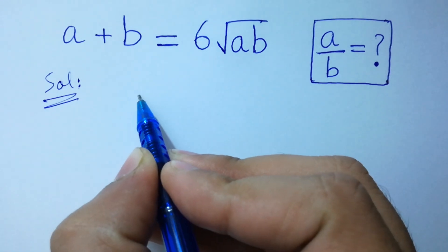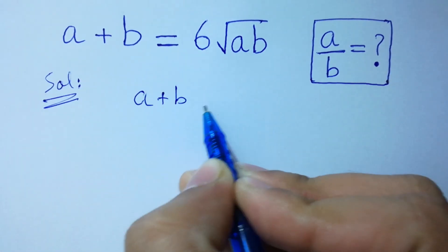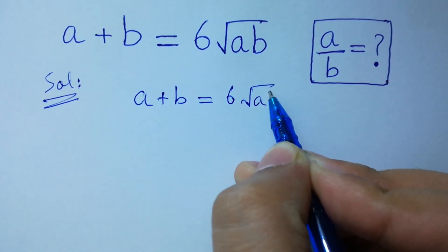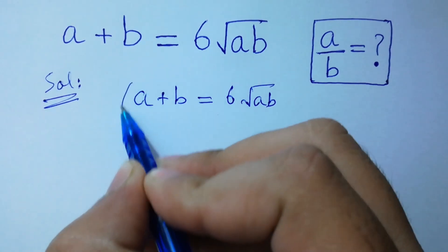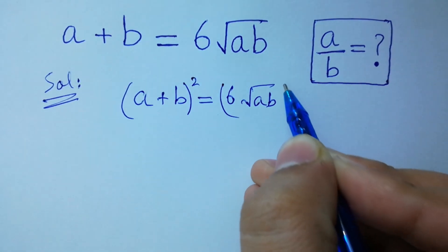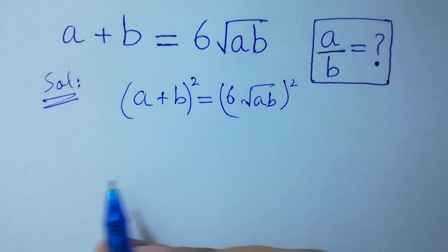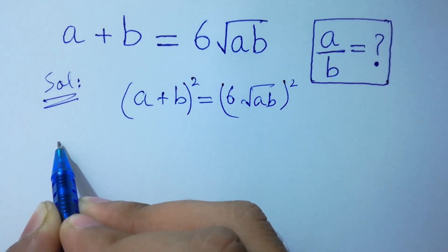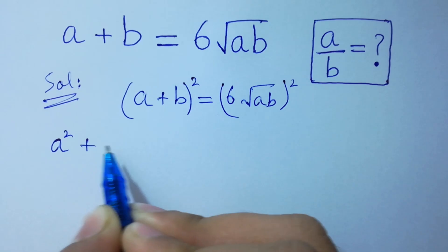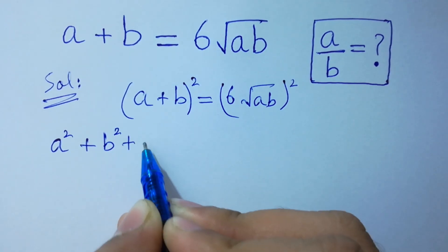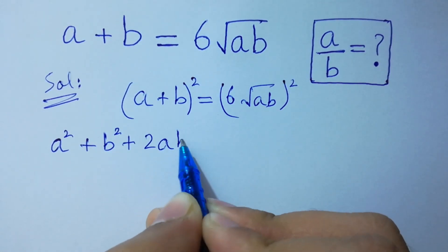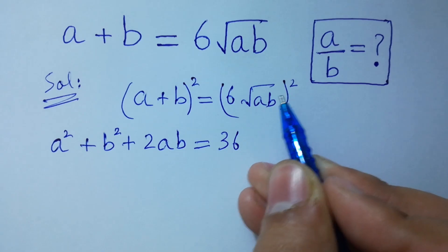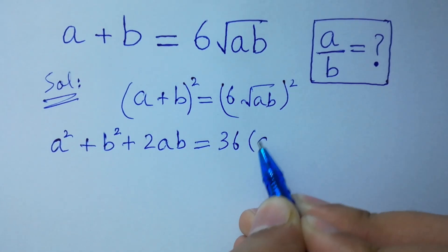We have a plus b equal to 6 times the square root of ab. To solve this, take the square on both sides. We have (a plus b) whole square. The formula gives a squared plus b squared plus 2ab equal to 36ab, as the square root of ab squared cancels with the square root.